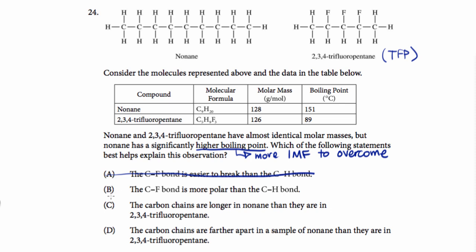Answer choice B says that the carbon-fluorine bond is more polar than the carbon-hydrogen bond. So we can see that TFP does have these carbon-fluorine bonds, and we know that a carbon-hydrogen bond isn't all that polar and fluorine is pretty electronegative. So this is true. This statement by itself is true.